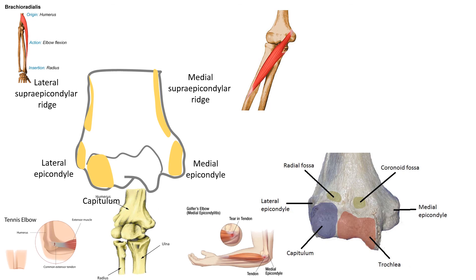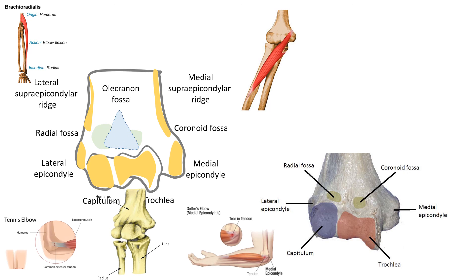The capitulum articulates with the radial head, and the trochlea articulates with the trochlear notch of the ulna. The radial fossa accommodates the radial head when the elbow is flexed. The coronoid fossa accommodates the coronoid process of the ulna when the elbow is flexed. The olecranon fossa lies posteriorly and accommodates the olecranon process of the ulna when the elbow is extended.